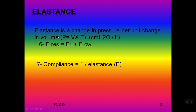We can also calculate it as: total compliance equals lung compliance multiplied by chest wall compliance, over lung compliance plus chest wall compliance. Elastance is the reverse of compliance — it is change in pressure per unit change in volume, measured in cmH₂O per liter. The total elastance of the respiratory system equals lung elastance plus chest wall elastance.